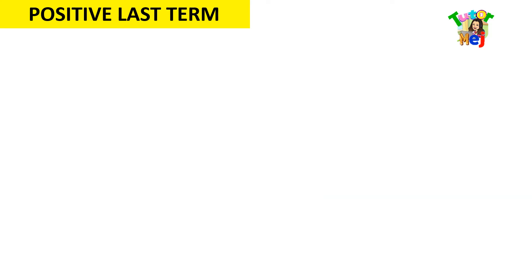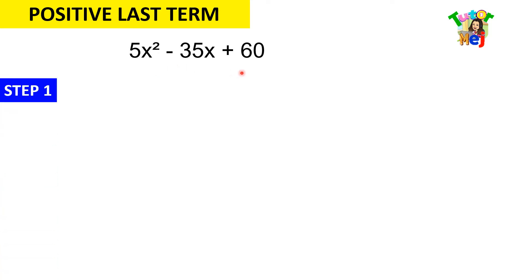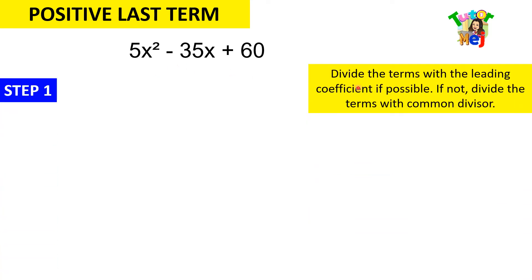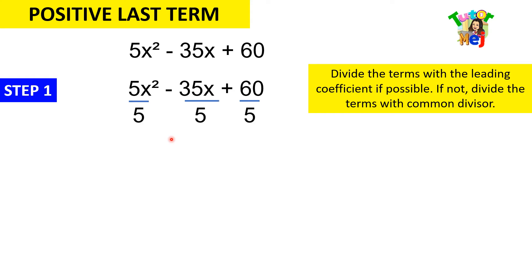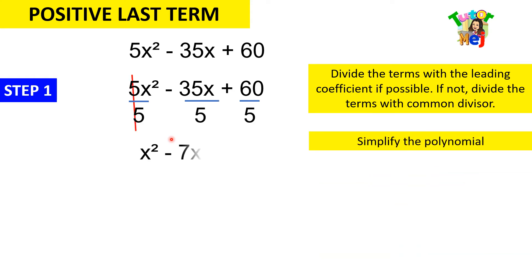Now let's have another example. We have 5x squared minus 35x plus 60. For step 1, divide the terms with the leading coefficient if possible. If not, divide with the common divisor. This time, we can divide everything by 5. Simplifying, we get x squared minus 7x plus 12.